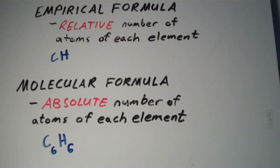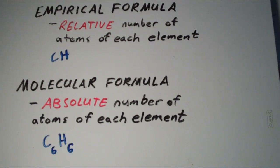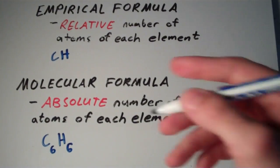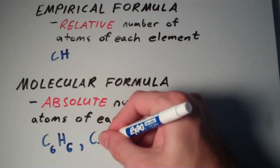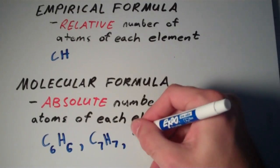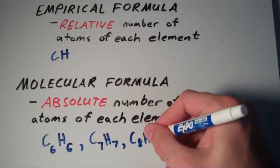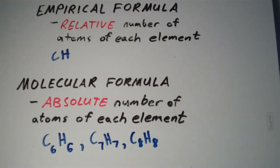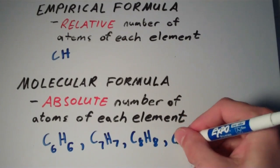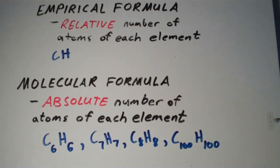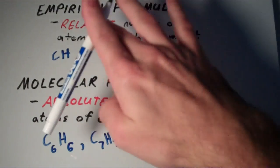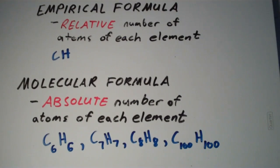Note that the empirical formula CH could also apply to compounds that have molecular formulas other than C6H6. We could also have the molecular formula C7H7, C8H8, or even C100H100. All of these molecular formulas have the empirical formula CH.